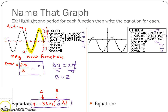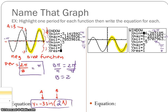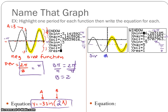Moving on to the second graph, we are going to highlight one period. Since we don't have any horizontal shifts, we're looking to see where it's starting on the y-axis. It started here and went up. If it starts on the midline and goes up, it's a positive sine function. So a is positive, and it's going to be y equals some positive number times sine of something.